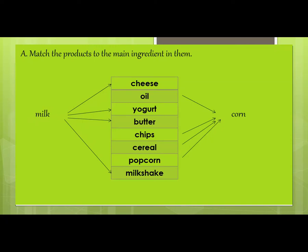How is cheese made? Cheese is definitely not made from corn. Cheese is made by curdling milk.